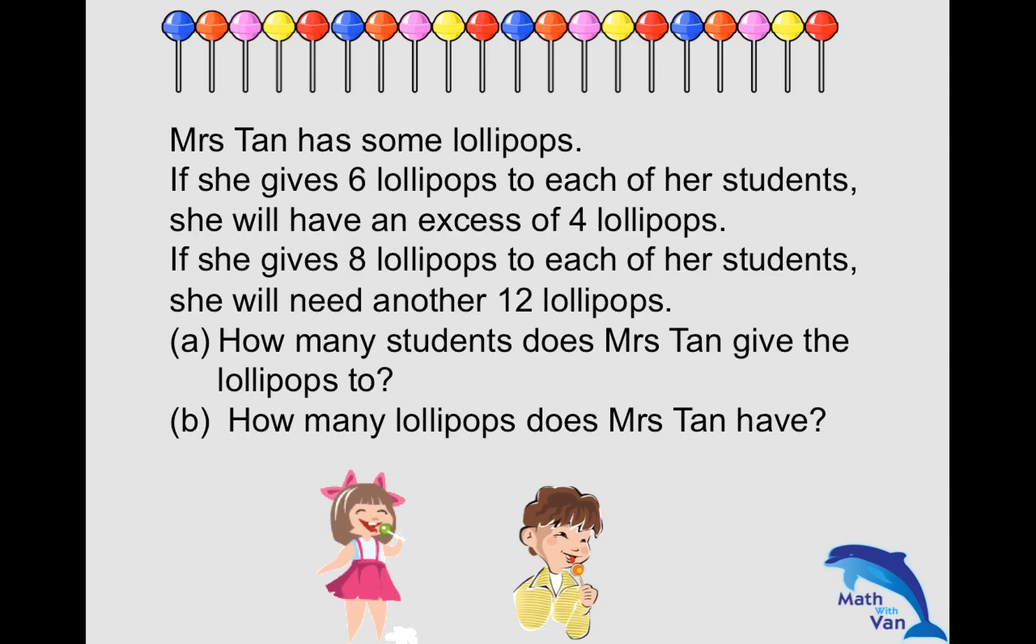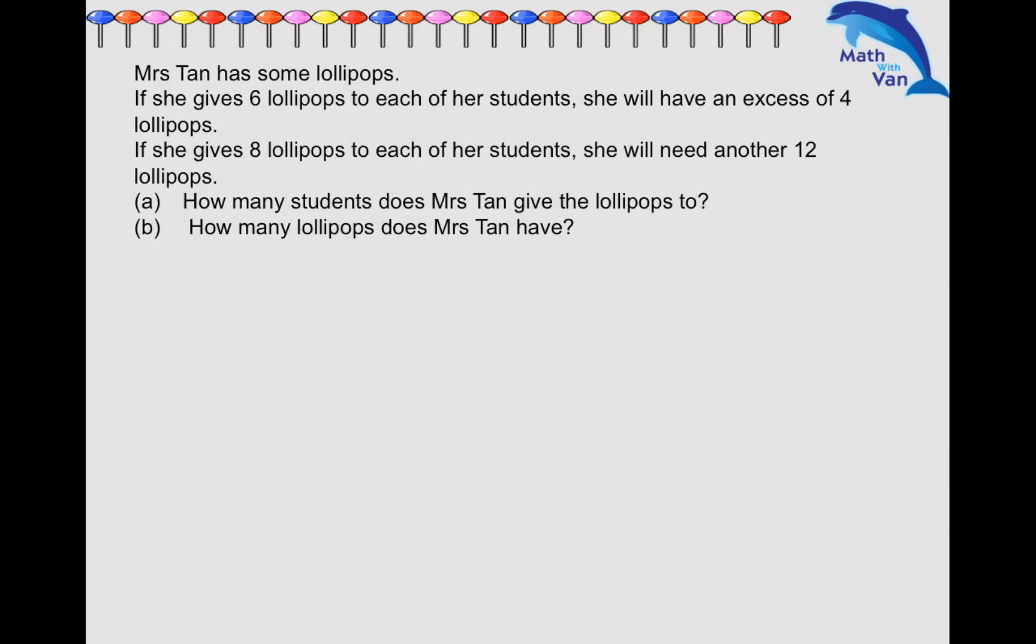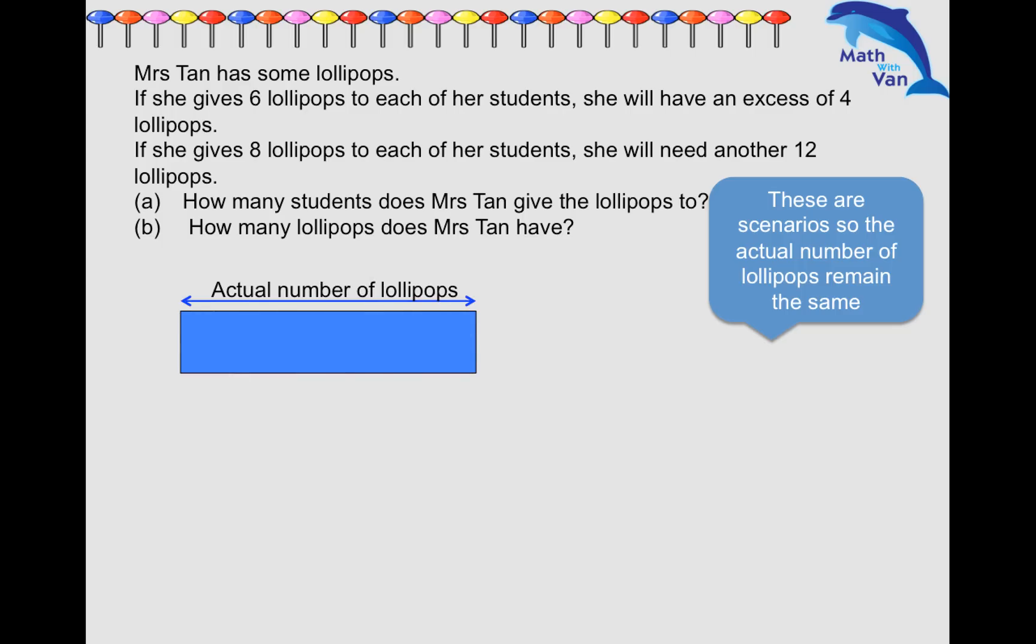These are basically scenarios. They never actually happen. The actual number of lollipops is always the same in both scenarios. So this is my actual number of lollipops. In both scenarios it will always be the same.